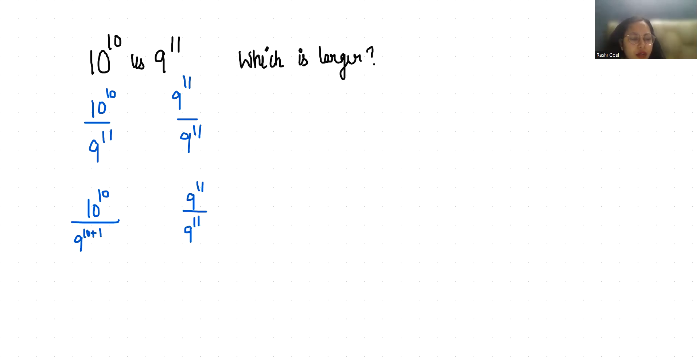According to exponent rule, it becomes x power m plus n as x power m times x power n. Or 9 power 11 by 9 power 11 we can write it as 1.